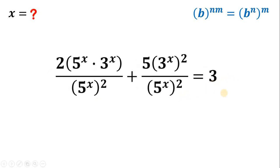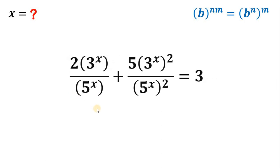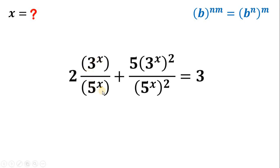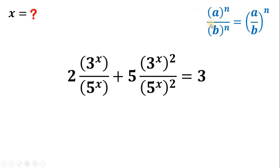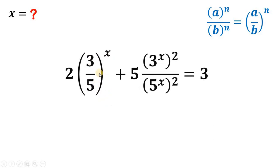Now let's focus on the first term: 5 raised to x times 3 raised to x, over 5 raised to x quantity squared. We have a factor of 5 raised to x in the numerator and also in the denominator, so we can cancel one of them. So we have 2 times 3 raised to x over 5 raised to x, which can be written as 2 times the quantity 3 raised to x over 5 raised to x. The second term becomes 5 multiplied by 3 raised to x quantity squared over 5 raised to x quantity squared. Take note that a raised to n over b raised to n equals a over b raised to the power of n. Therefore, 3 raised to x over 5 raised to x can be written as 3 over 5 raised to the power of x.